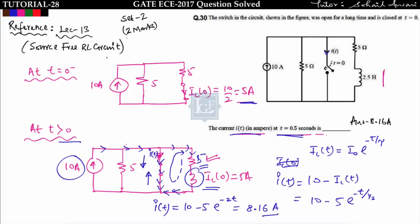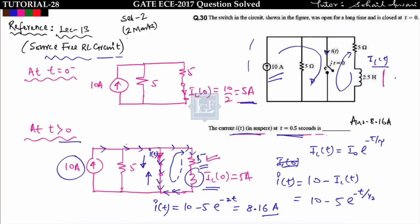This was asked in Set 2 for 2 marks. The concept is from source-free RL circuits — even though the source is connected for t greater than 0, it does not affect the RL network because of the short circuit. The circuit is divided into two parts, and i(t) equals 10 minus i_L(t) for t greater than 0.